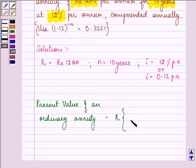The formula is R bracket 1 plus 1 plus i raised to the power minus N divided by i.